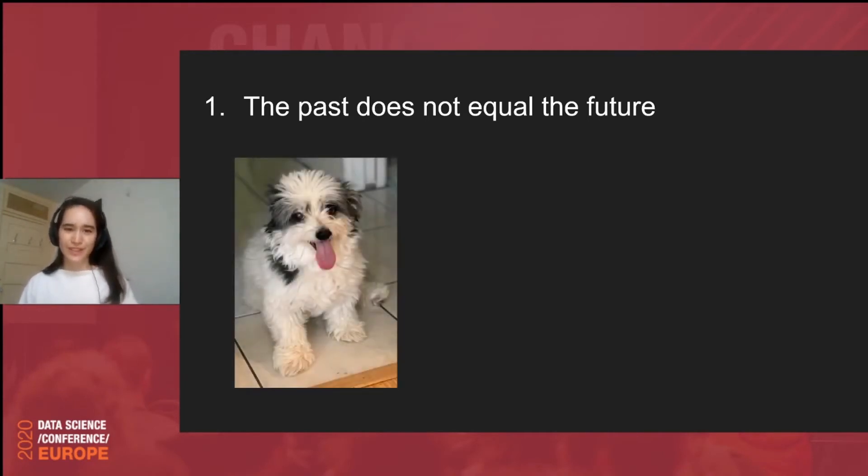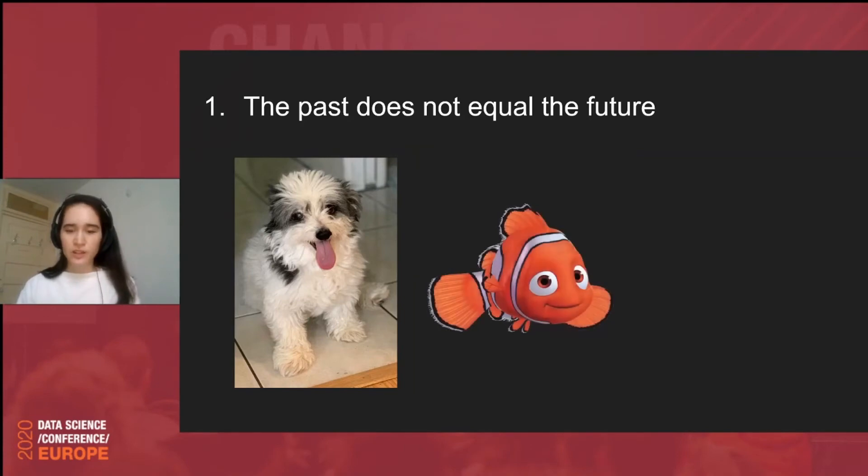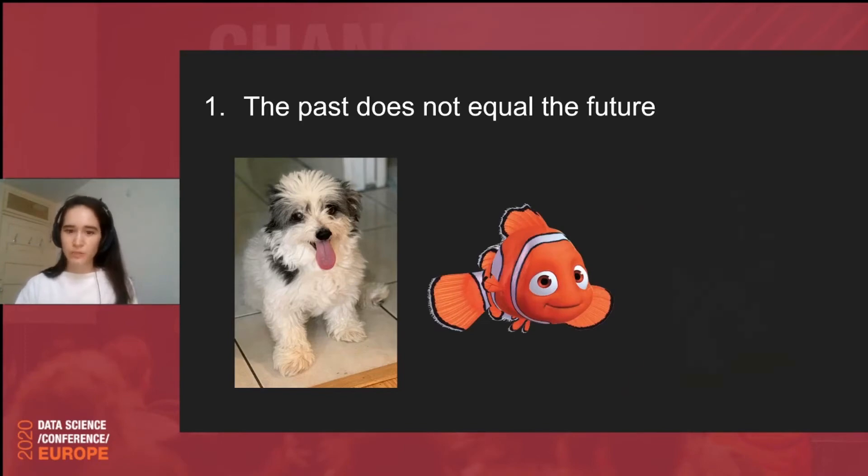And this is my dog, by the way. She is quite cute. So, a computer vision practitioner, let's say they have a highly accurate model that can classify dogs from fish. And they can be quite happy with their work. Dogs aren't going to morph into dog-fish hybrids any time in the near future. So, they can be confident that their model is a good one.